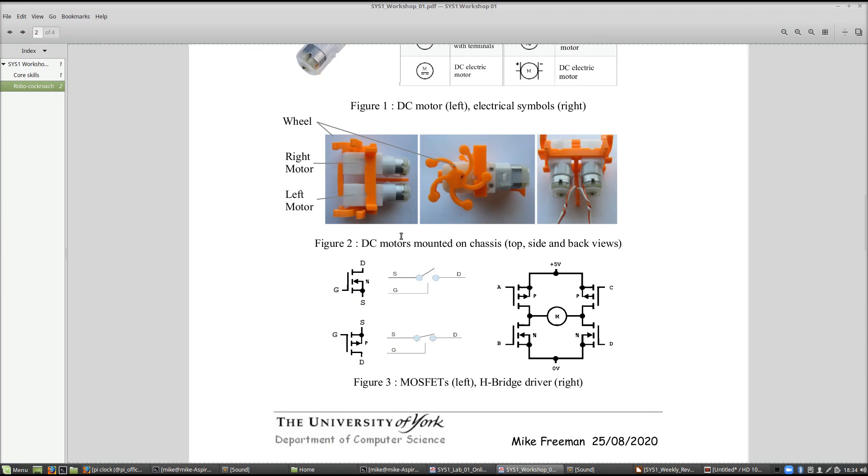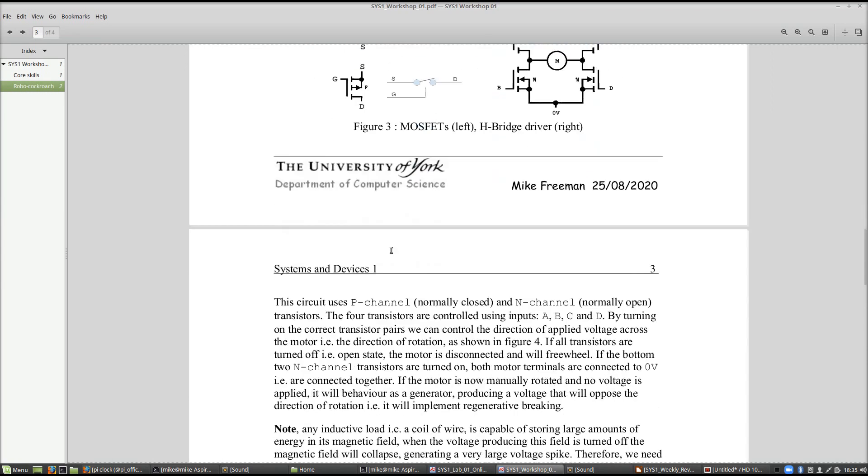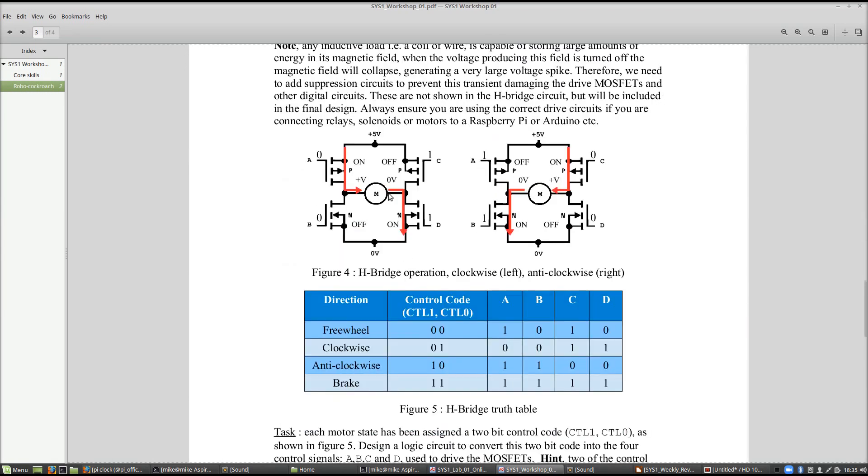Our robot has two motors and we want to control those to steer our robot around its environment. If both motors go forwards, the robot will move forwards. If they both go backwards, it goes backwards. If they turn in different directions, the robot will rotate on the spot either clockwise or anti-clockwise. To control our motor we're using an H-bridge.